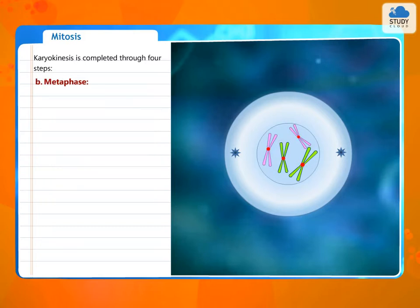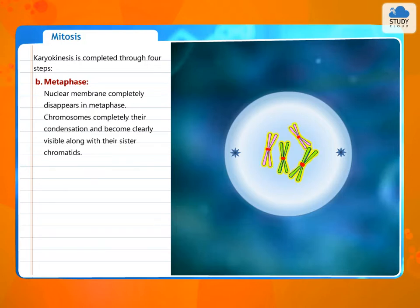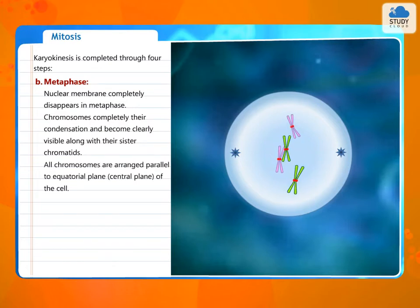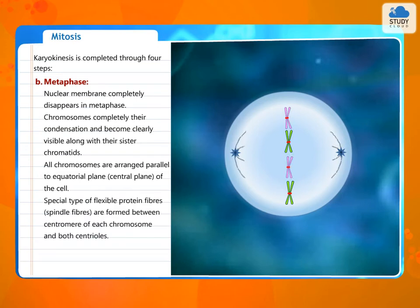B. Metaphase. Nuclear membrane completely disappears in metaphase. Chromosomes complete their condensation and become clearly visible along with their sister chromatids. All chromosomes are arranged parallel to equatorial plane, central plane of the cell. Special type of flexible protein fibres, spindle fibres, are formed between centromere of each chromosome and both centrioles.